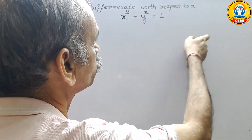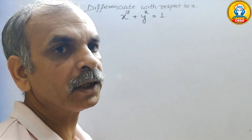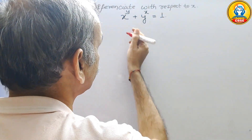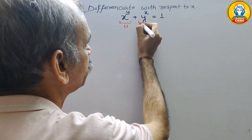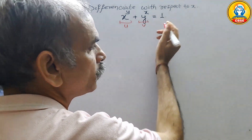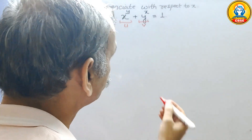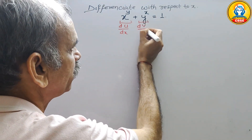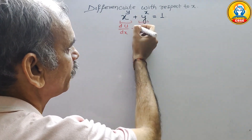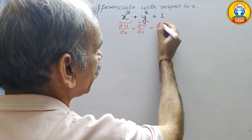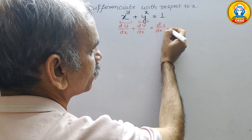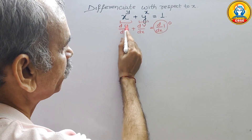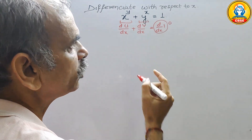The question is to differentiate with respect to x, given that x to the power of y plus y to the power of x is equal to 1. We will take x^y as u and y^x as v. Differentiating both sides gives du/dx plus dv/dx equal to d/dx of 1, which becomes 0. So du/dx plus dv/dx equals 0.